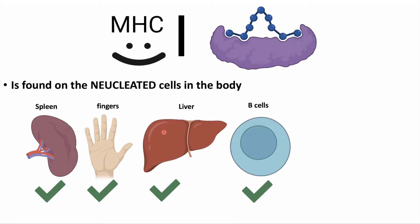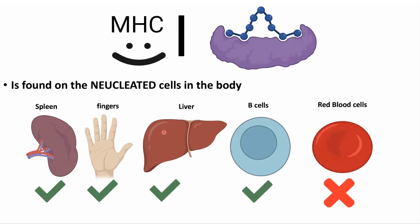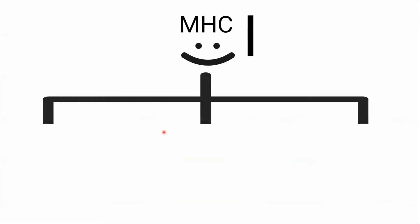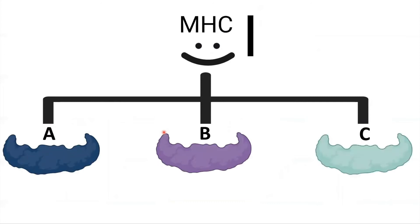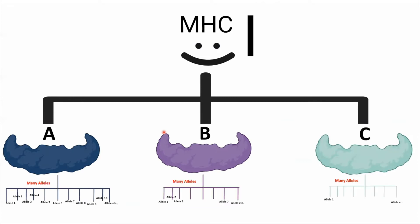MHC class 1 is not found in red blood cells because there is no nucleus in RBCs. MHC class 1 is divided into three types: MHC class 1A, MHC class 1B, and MHC class 1C. Each one of these has many alleles, and they differ among individuals.